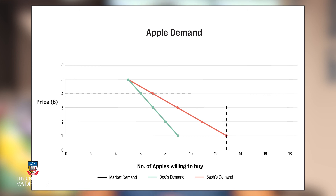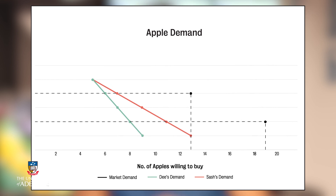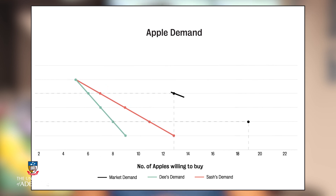At the price of $4, the market demand is 13. And at a price of $2, the market demand is 19.